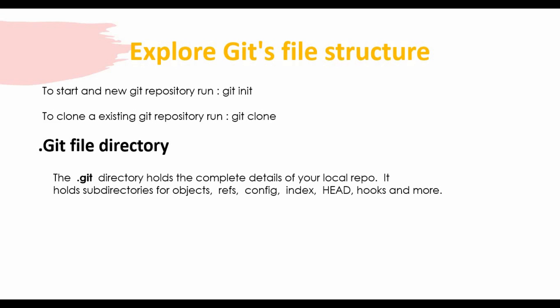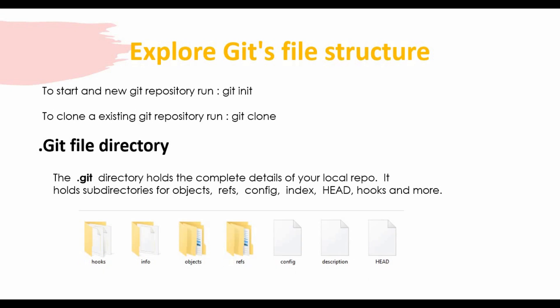The .git directory holds the complete details of your local repository. It contains subdirectories like objects — we spoke about objects earlier — refs, config, index, head, hooks, and there are more folders and files like description. These are the key folders and files we'll be talking about in this tutorial — what these files are all about and what content is stored in them.